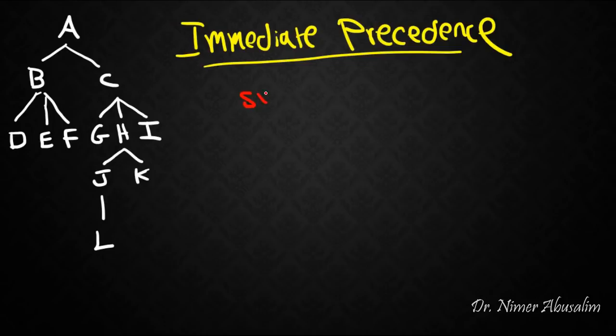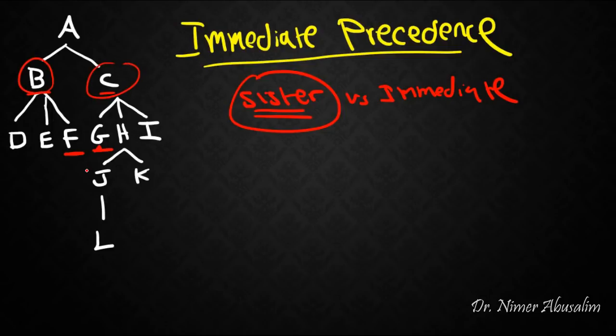So let's see the difference now between sister precedence and immediate precedence. F and G. F does not sister precede G. Actually, let's look at all of these relations. F precedes G. We know that because B precedes C. But F does not sister precede G, and that's because they are from different mothers. They're not sisters in the first place. But F immediately precedes G because there's nothing in between them.